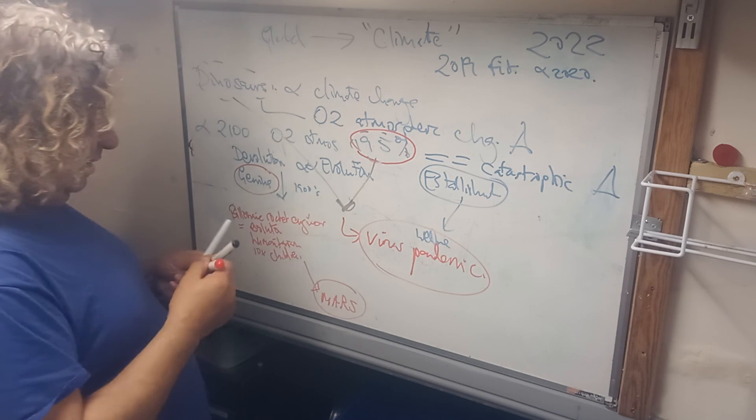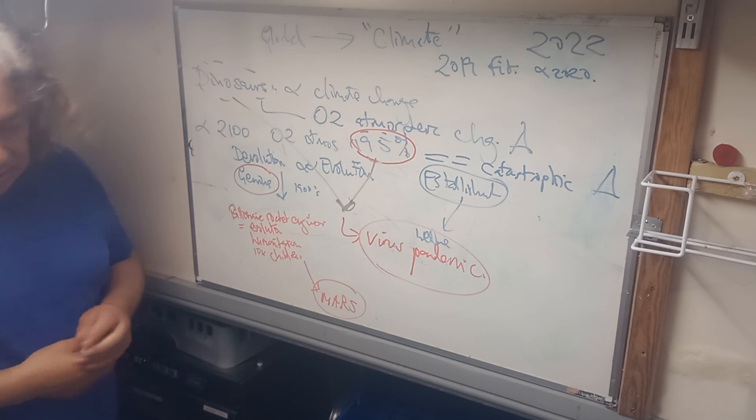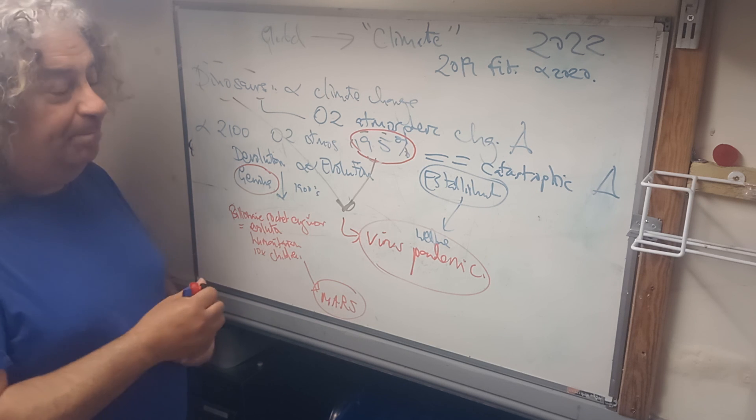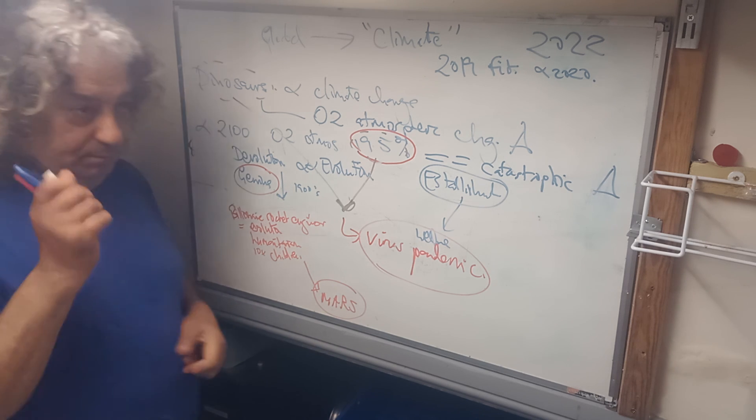So, there we are. That is global climate change and COVID pandemic explained. Good luck. Good luck.